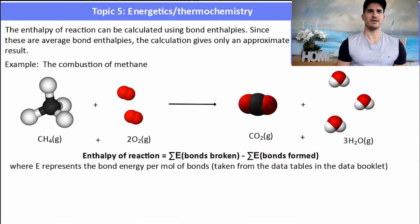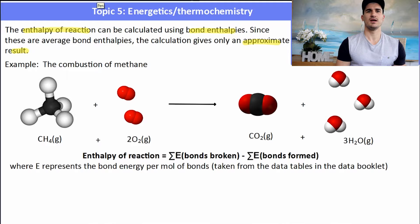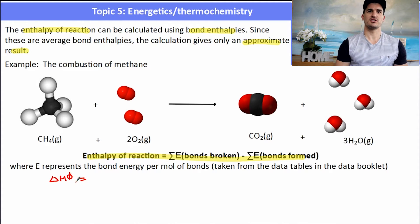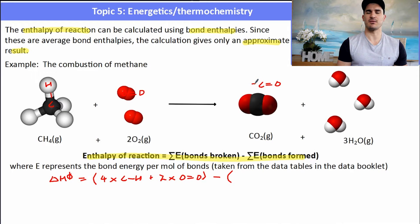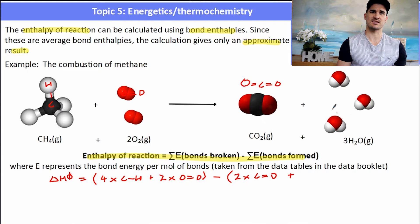The enthalpy of a reaction can be calculated using standard bond enthalpies. Since these are average bond enthalpies, the calculation gives only an approximate result. The formula is: ΔH = bonds broken minus bonds formed. For the combustion of methane (CH₄ burned in excess oxygen to form CO₂ and water), we break four C–H bonds and two O=O bonds, then subtract the bonds formed: two C=O bonds in CO₂ and six O–H bonds in three water molecules.